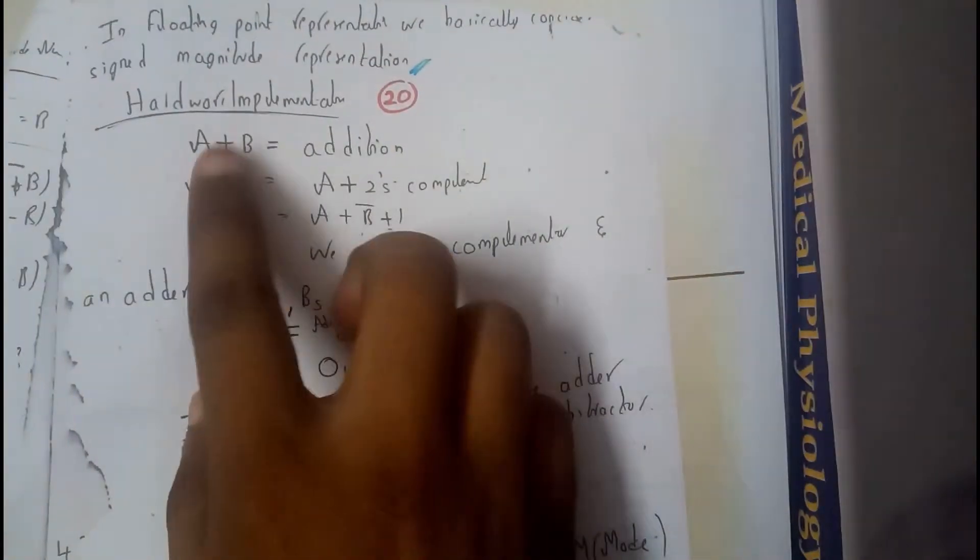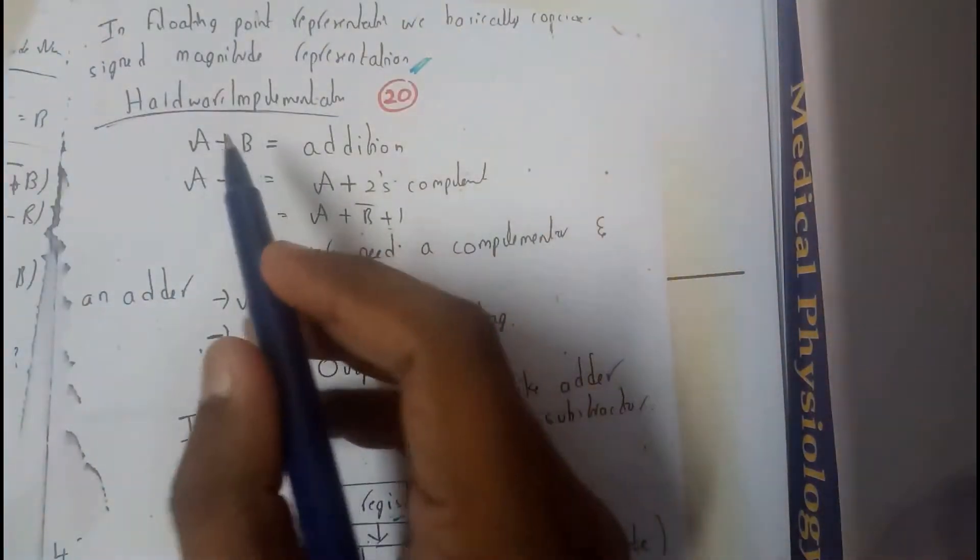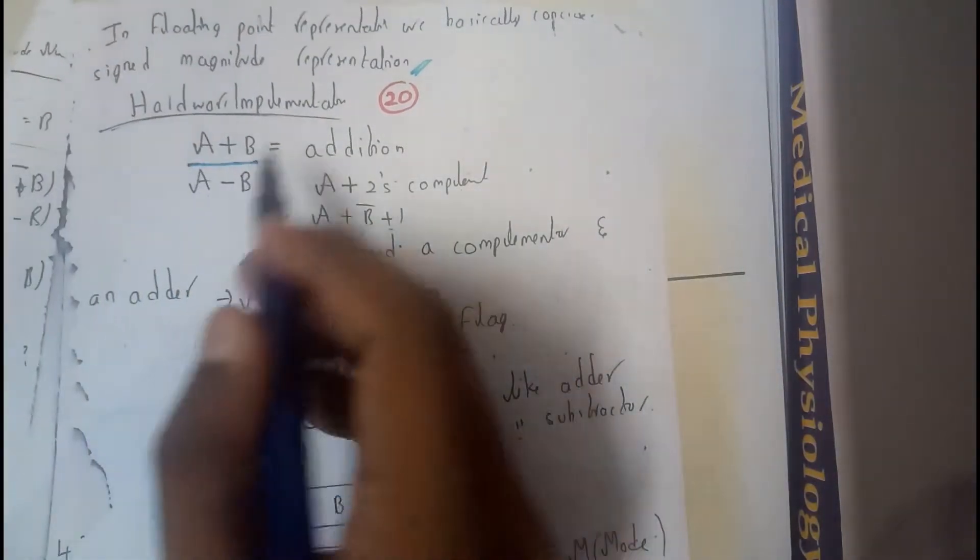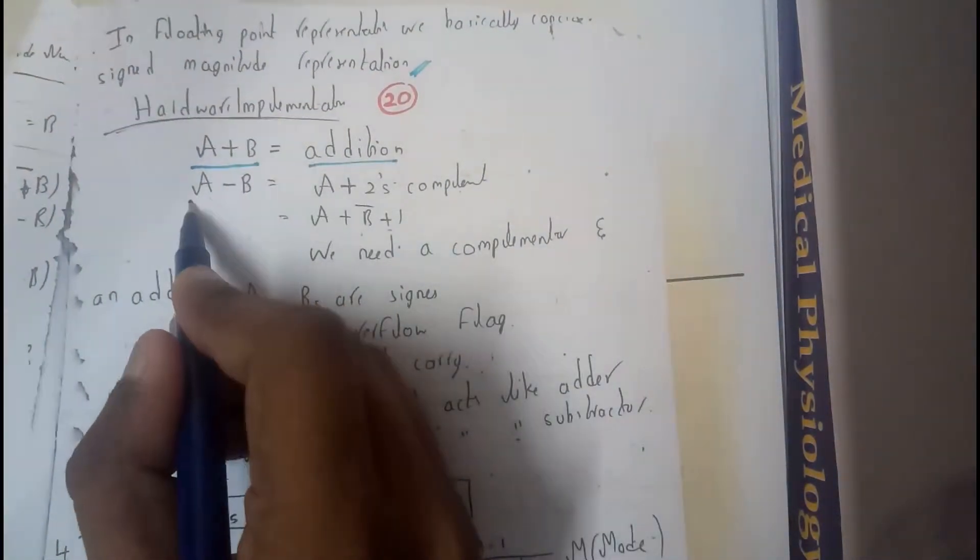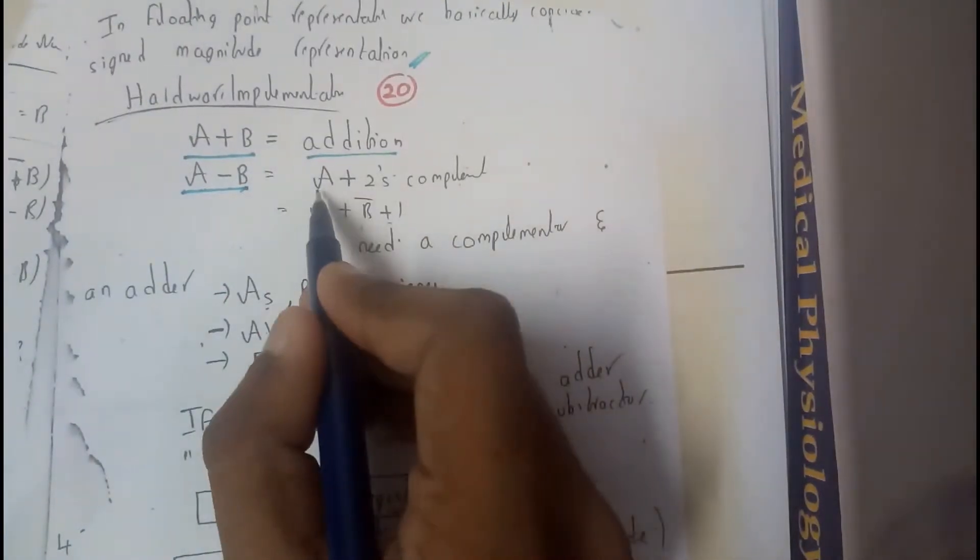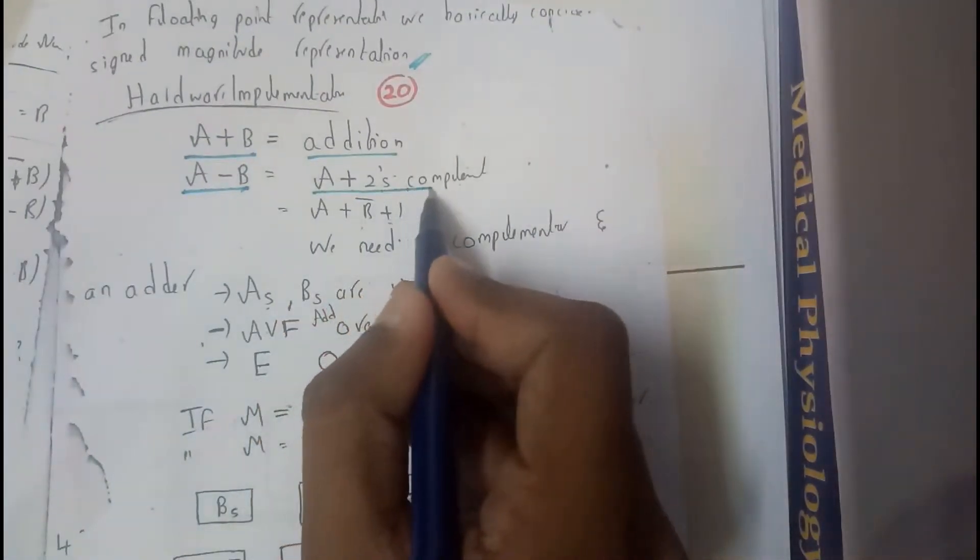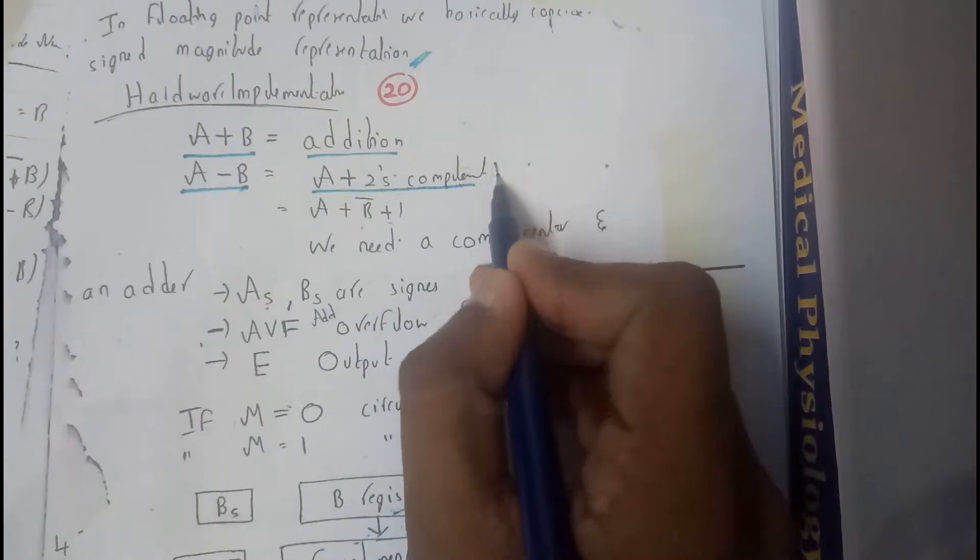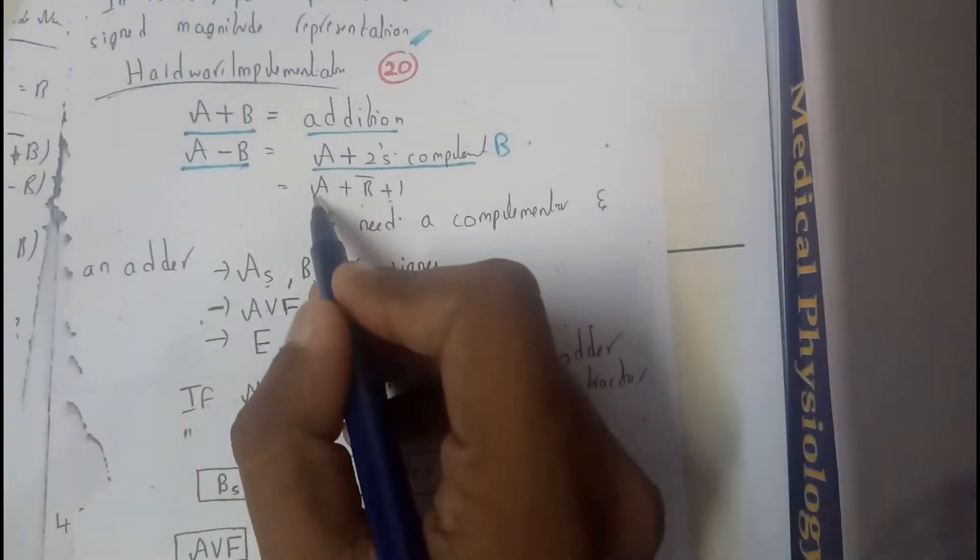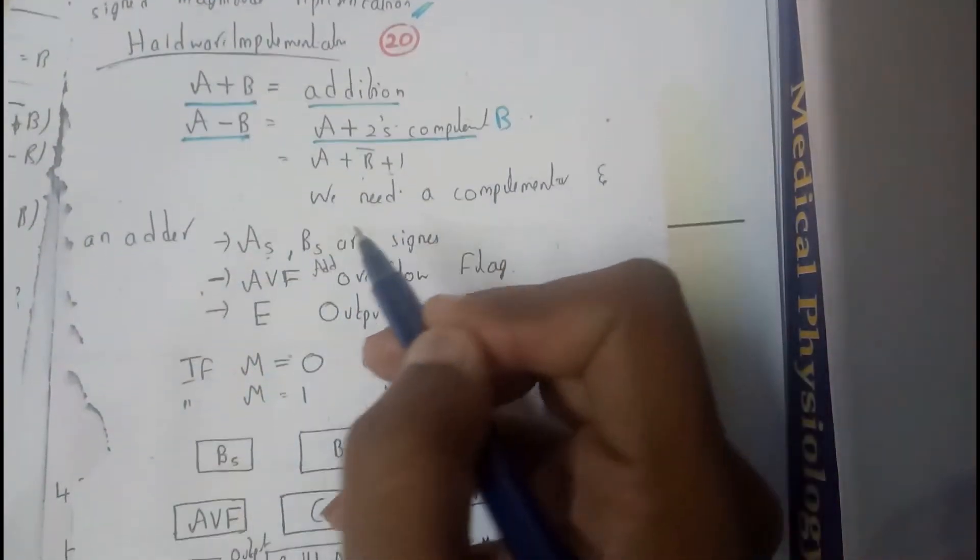Okay, hardware implementation. So basically in this whenever we need to add two numbers A plus B, we will be directly adding them. If we want to do A minus B, we will be doing the A plus 2's complement of B, that is nothing but A plus B bar plus 1.